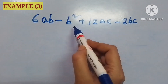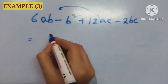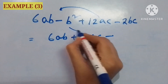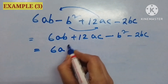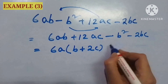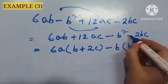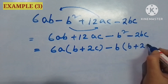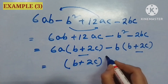In my third example: 6ab minus b squared plus 12ac minus 2bc. I have to shift the third term into the second position to create the required group, and b squared will be shifted to third place — I am changing the term positions while keeping the sign the same. So 6a will be common and b plus 2c is left; from the last two terms, minus b will be common and b plus 2c is left again. From both groups, b plus 2c is common, and this is the result.